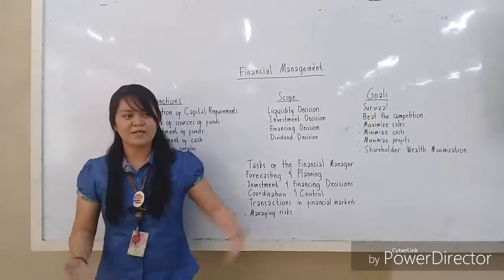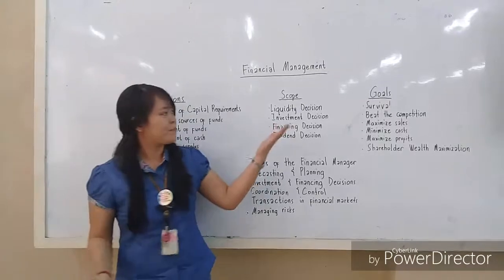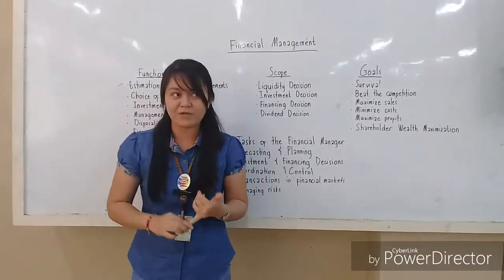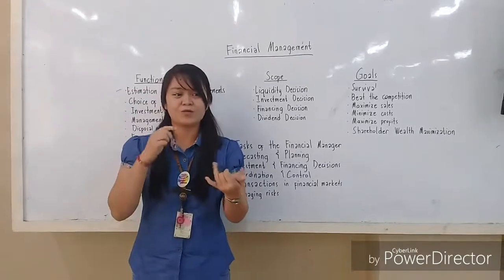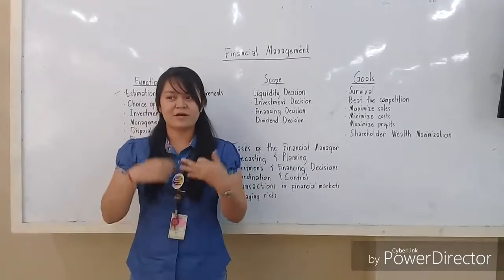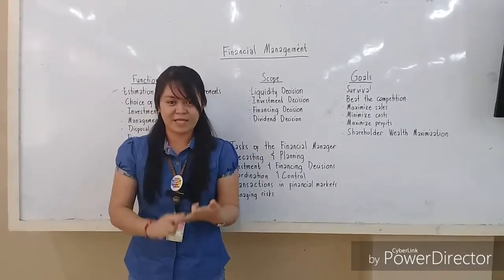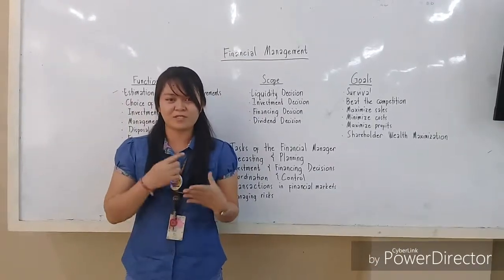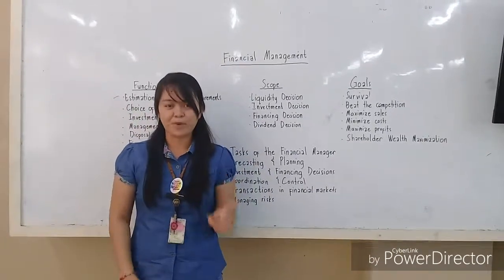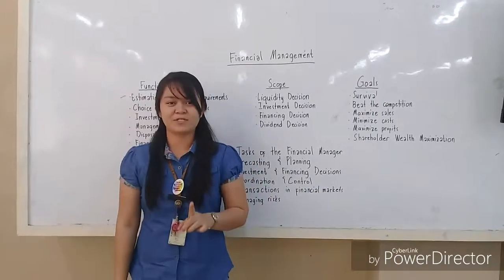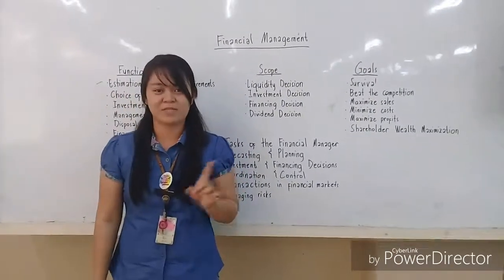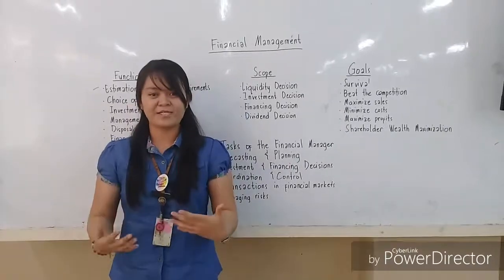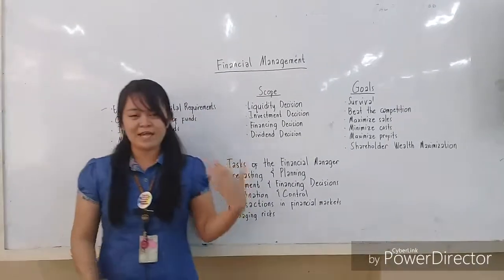Then there is the dividend decision, which is the net profit distribution to shareholders. The goals of financial management include survival, beating the competition, maximizing sales, minimizing cost, and maximizing profits. The most important goal is shareholder wealth maximization, which pertains to the market price of the share.